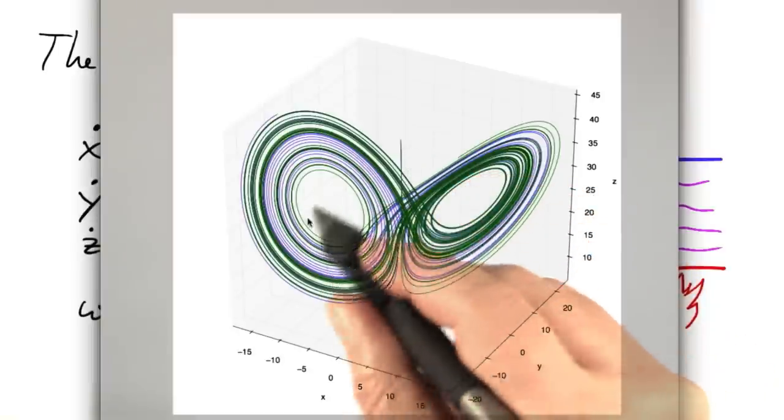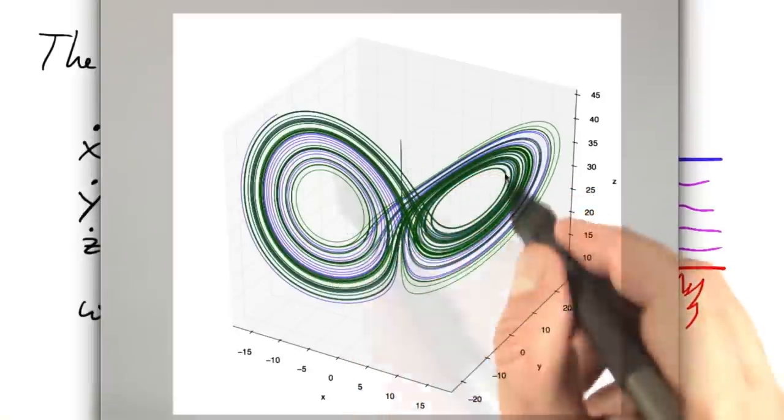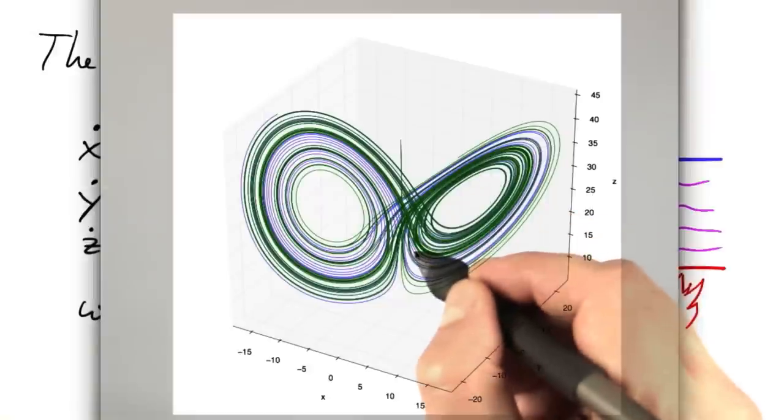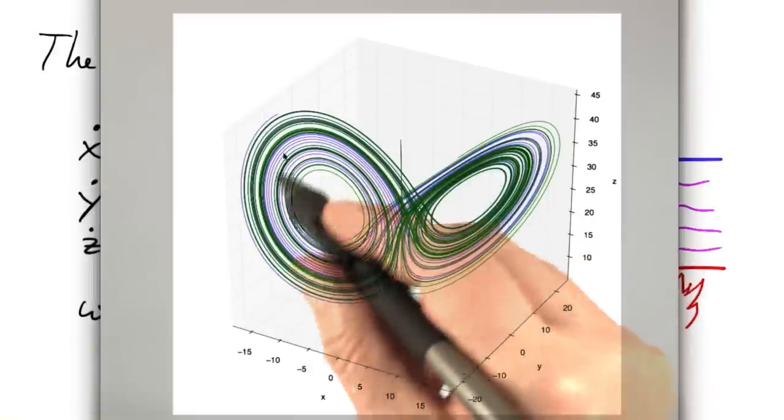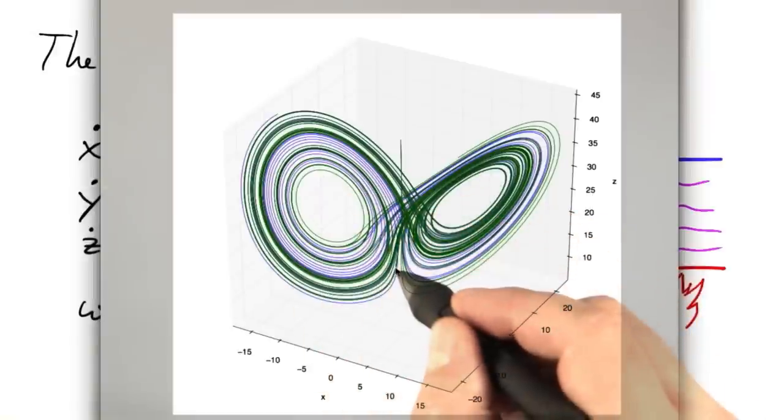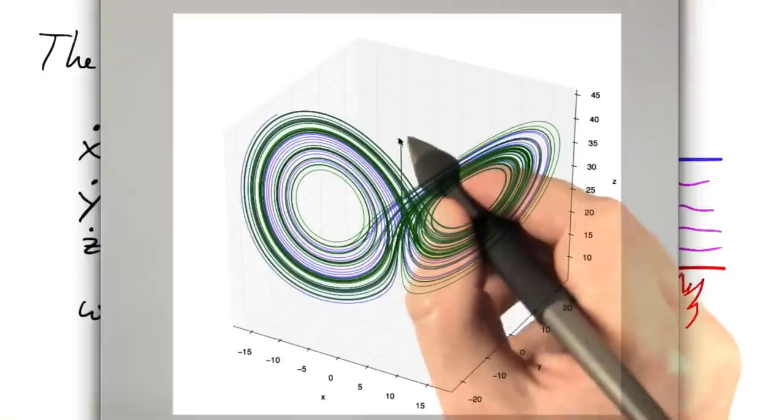The trajectories make some turns on one wing, then jump to the other wing, jump back to the first wing, and so on. And the number of turns they take per wing seems to be almost unpredictable. And there's one more thing.